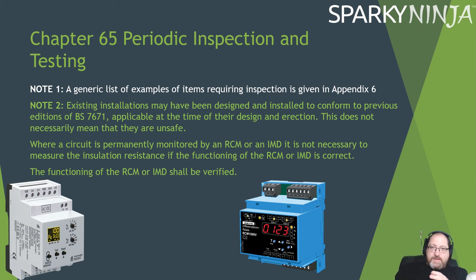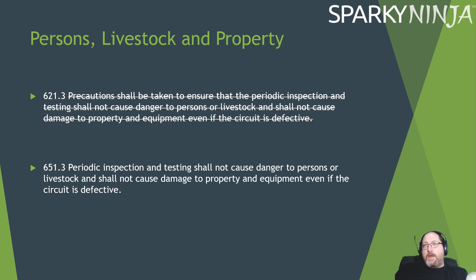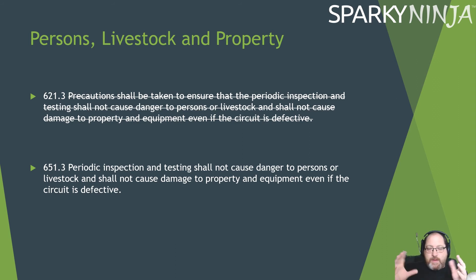So you've got to verify the function of an RCM and the function of an IMD — if they are okay, then the need to carry out insulation resistance tests is removed, because those devices have been doing it for you. Also, 6513: 'precautions taken' has been changed to 'periodic inspection testing shall not cause danger.' Previously it said precautions shall be taken to ensure it does not cause danger. Now it just says it must not cause danger. The ability to misinterpret what precautions are is no longer there — if you cause danger, that's a non-compliance.